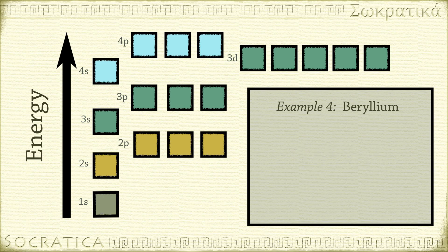Beryllium has four electrons. We fill the diagram from the bottom up. The electron configuration is 1s2 2s2.